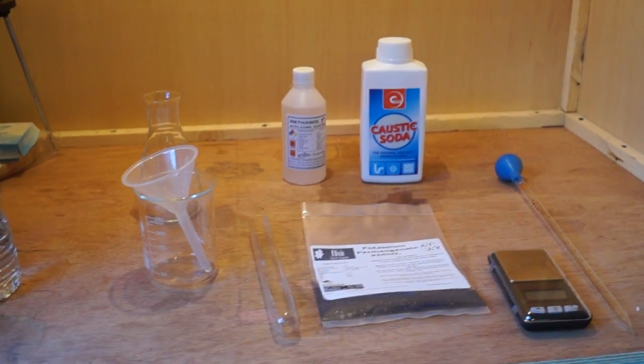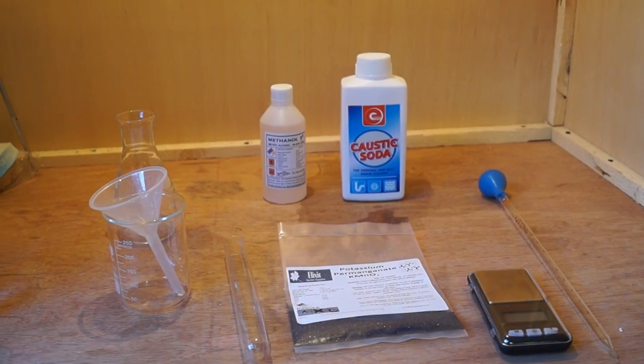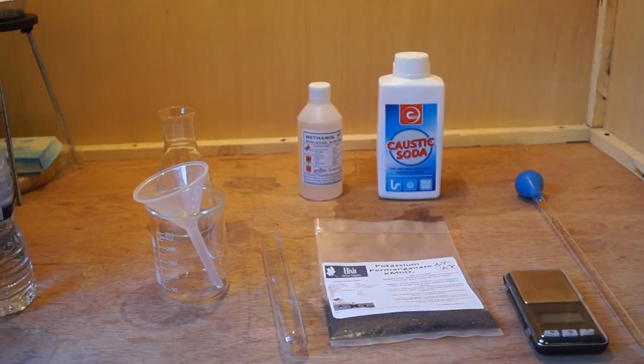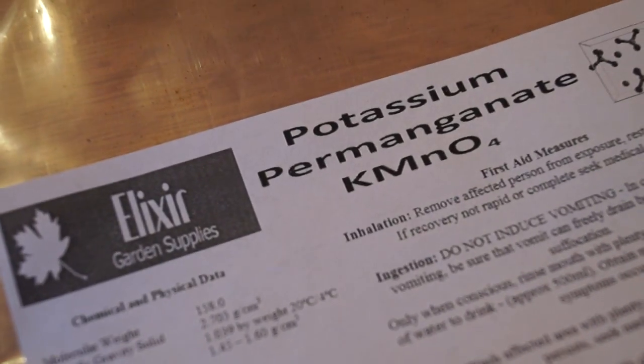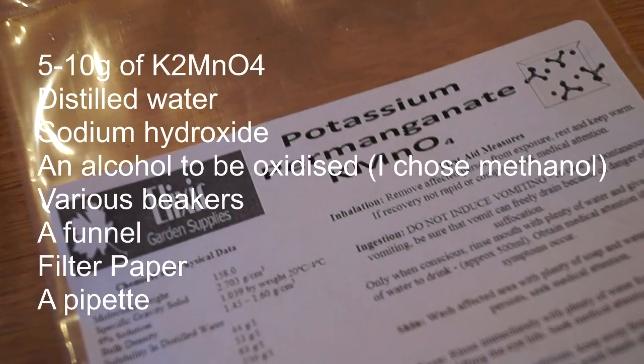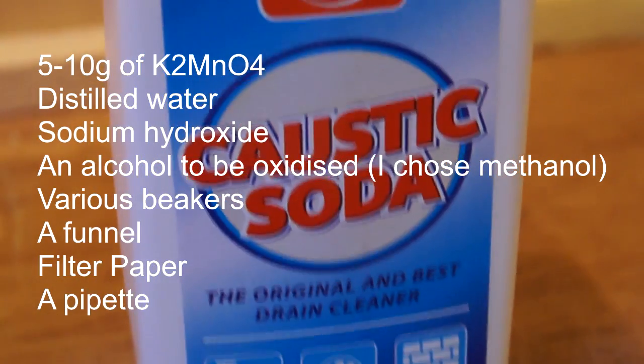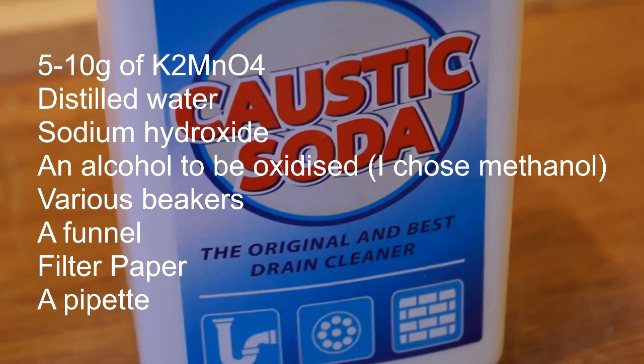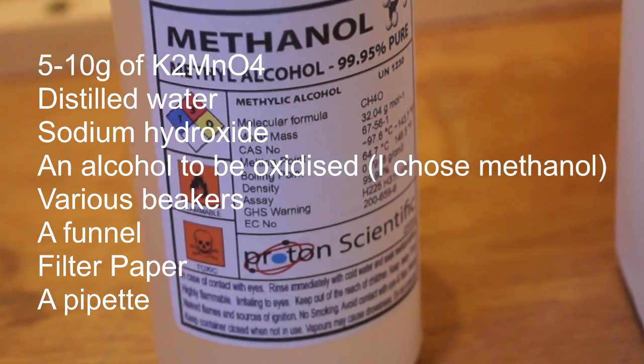Hello, in this video we are going to be looking at the oxidizing properties of potassium permanganate. You will need about 5-10 grams of potassium permanganate, distilled water, sodium hydroxide, and alcohol to be oxidized. I chose methanol.